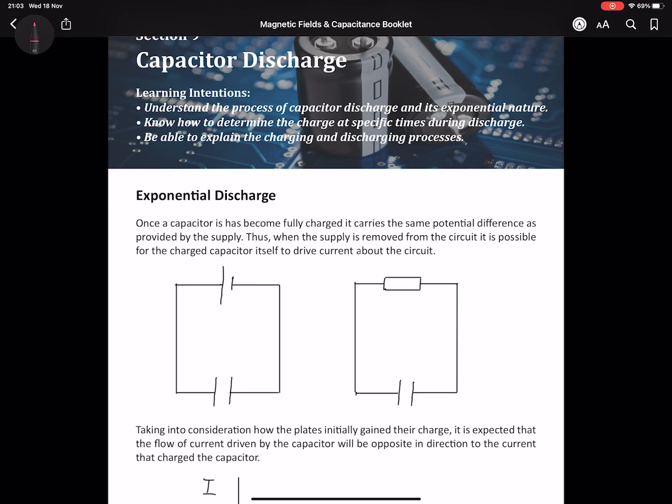Capacitors have an exponential nature in both charging and discharging. When we set up a circuit, electrons flow around until we get a build-up of negative charge on one plate and positive charge on the other. That flow of current gradually decreases as greater charge builds up, as more electrons on the negative plate repel incoming electrons, until you eventually hit a state of no current flowing as the capacitor is fully charged.